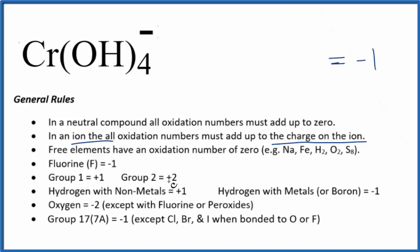For the chromium, we won't see that in our rules. It really depends what it's bonded to as to what its oxidation state is. Let's just call it X. Oxygen, that's going to be a minus 2.